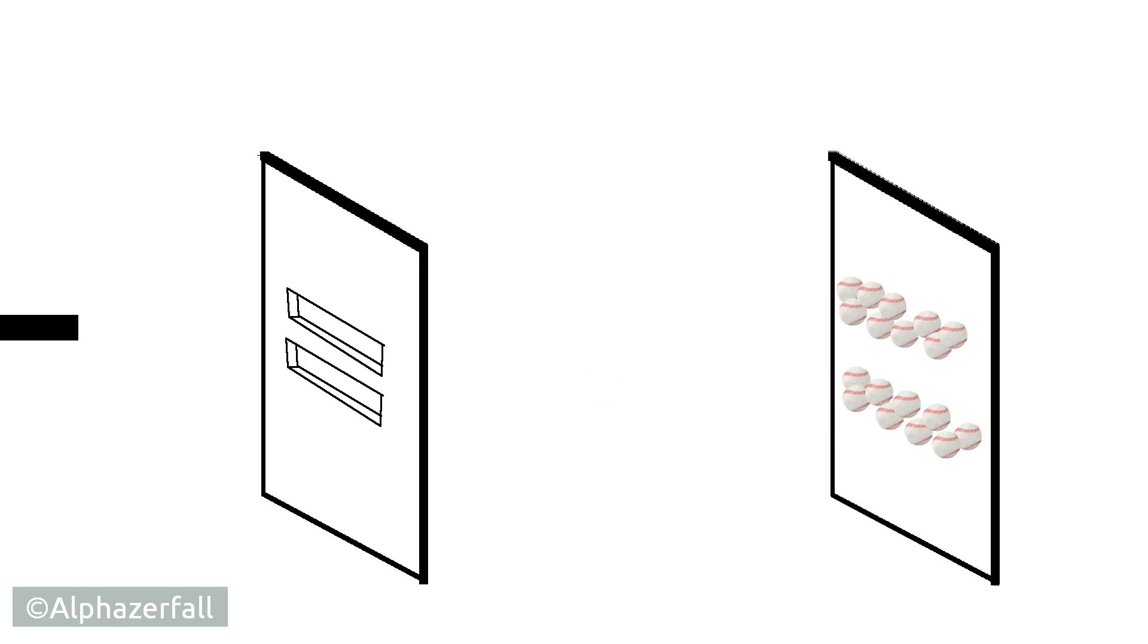If we repeat the experiment with two gaps we would receive such a pattern. That is how particles work, everything seems sensible. And now let's do the experiment again but instead of shooting baseballs we use light.